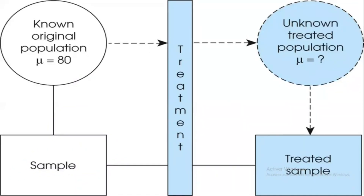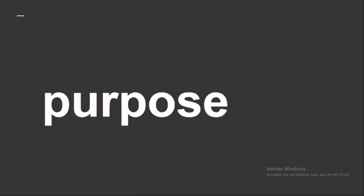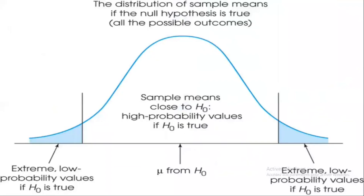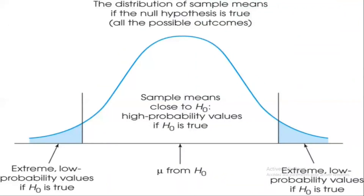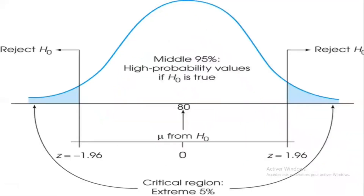It is also possible that the difference between the sample and the population is simply sampling error. The purpose of the hypothesis test is to decide between two explanations: (1) the difference between the sample and the population can be explained by sampling error — there does not appear to be a treatment effect; or (2) the difference is too large to be explained by sampling error — there does appear to be a treatment effect. Key terms include the null hypothesis, the alpha level, the critical region, and the test statistic.